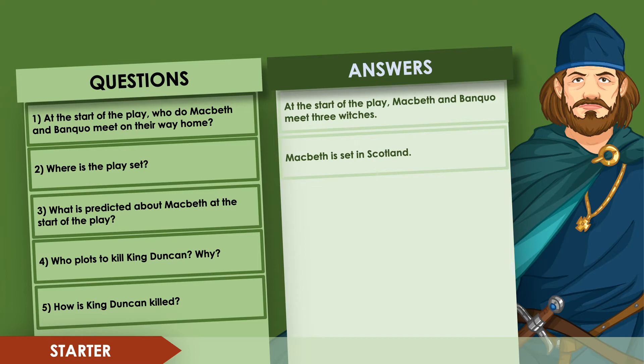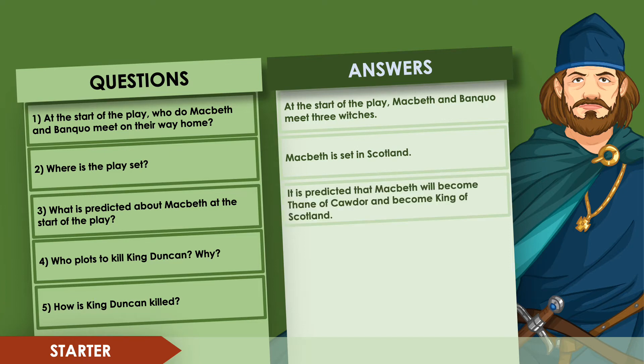Question three: what is predicted about Macbeth at the start of the play? The witches predict that Macbeth will become the Thane of Cawdor and become king of Scotland. They also predict that Banquo's descendants will become kings.